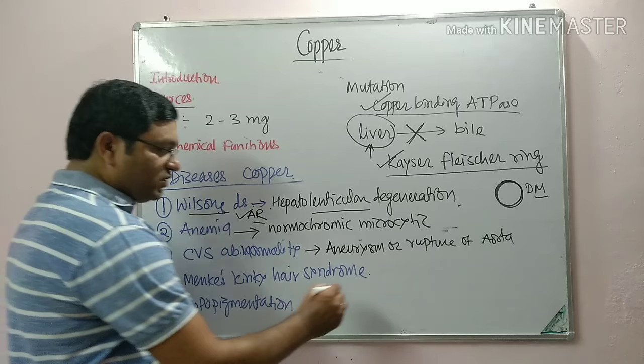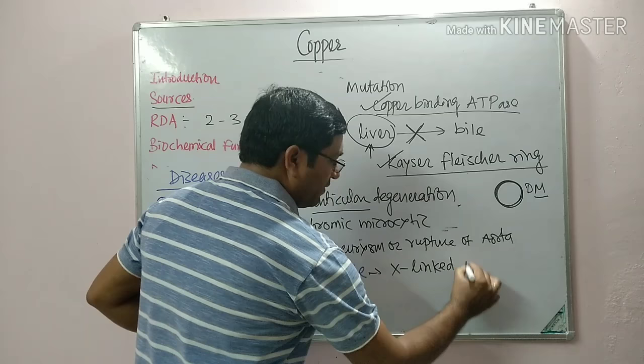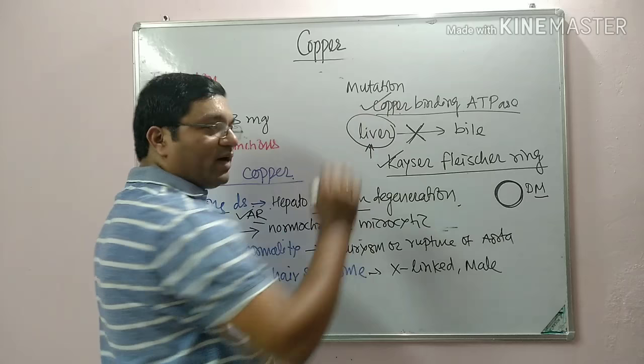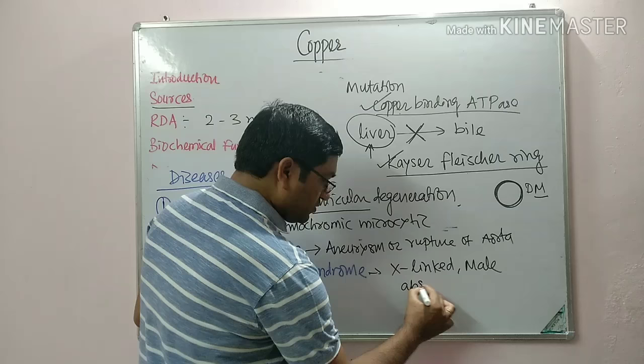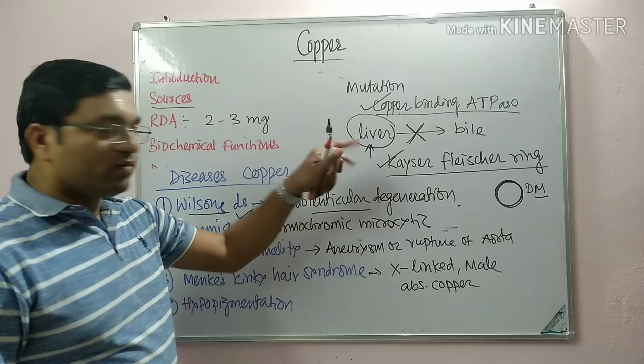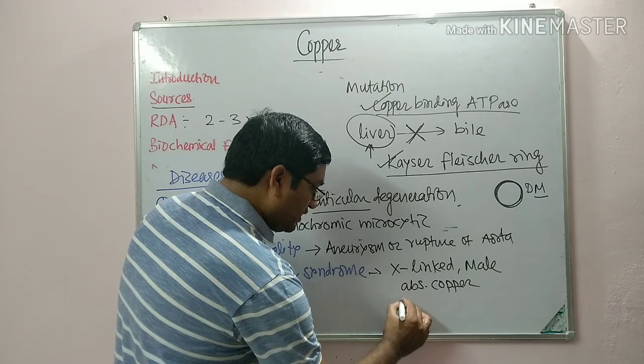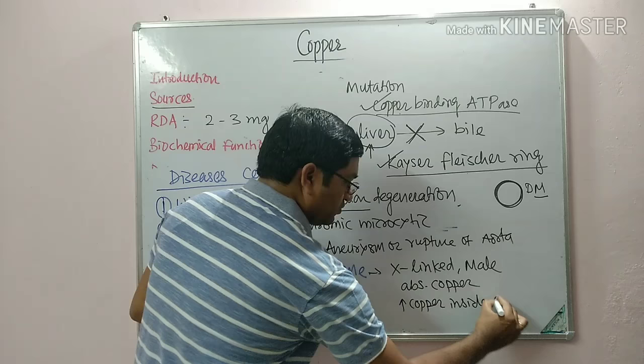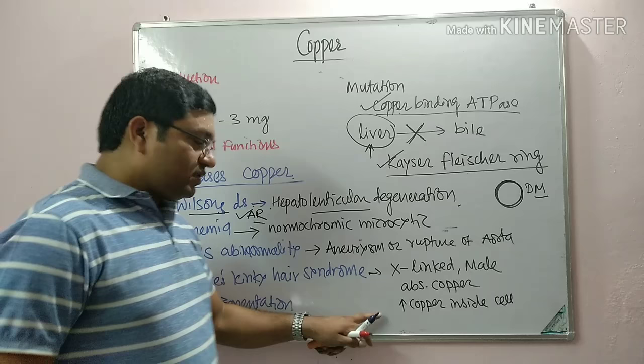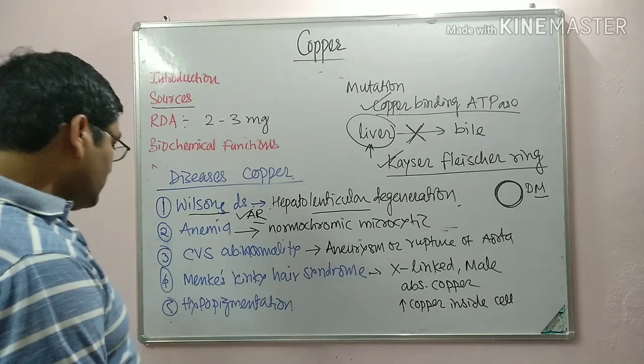In Menkes kinky hair syndrome, it is an X-linked disorder that typically affects male children. It is also due to a defect in copper-binding ATPase. In this disease, absorption of copper is normal, but due to the defect in copper-binding ATPase, copper is trapped inside the cell. So there is excess copper accumulated inside the cell, leading to Menkes kinky hair syndrome.